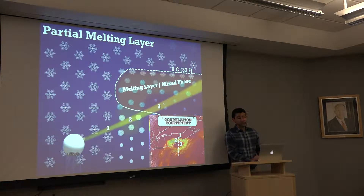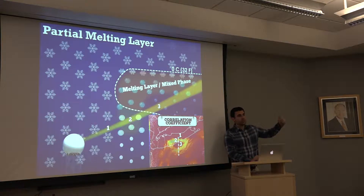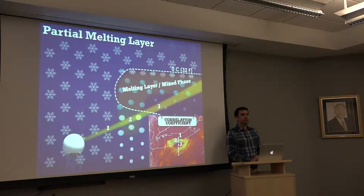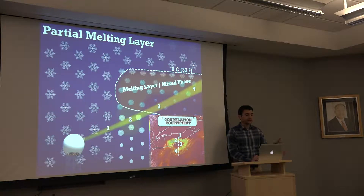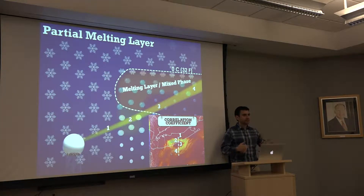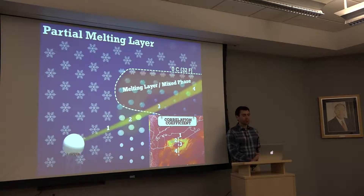The beam continues to zone three, where complete melting into raindrops gives us just pure raindrops in the range bin, so CC goes back up — you see that semicircular region of high CC values underneath the melting layer above. Moving into zone four, CC drops again because of snow melting into liquid with lots of diversity. You can see a half melting-layer ring, and then the downward descent of the melting layer where the mixed phase exists.